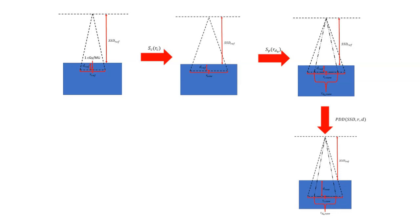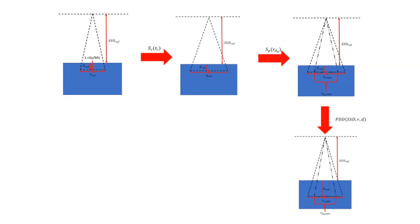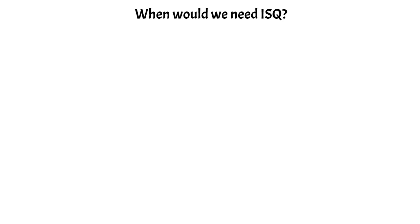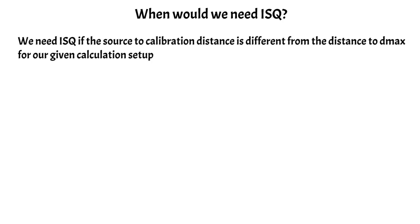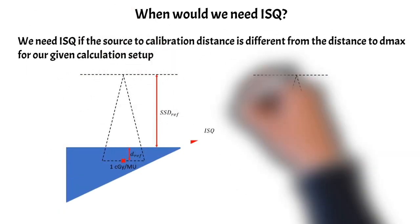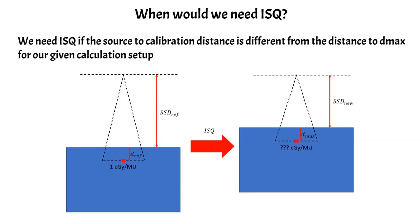So when might we need to use something like an inverse square correction? Remember, ISQ stands for our inverse square factor in our PDD dose calculation formalism. And we would need an inverse square factor if the source to calibration distance was different from the distance to D max in our given setup geometry. And so this is an illustration showing what I mean by this.